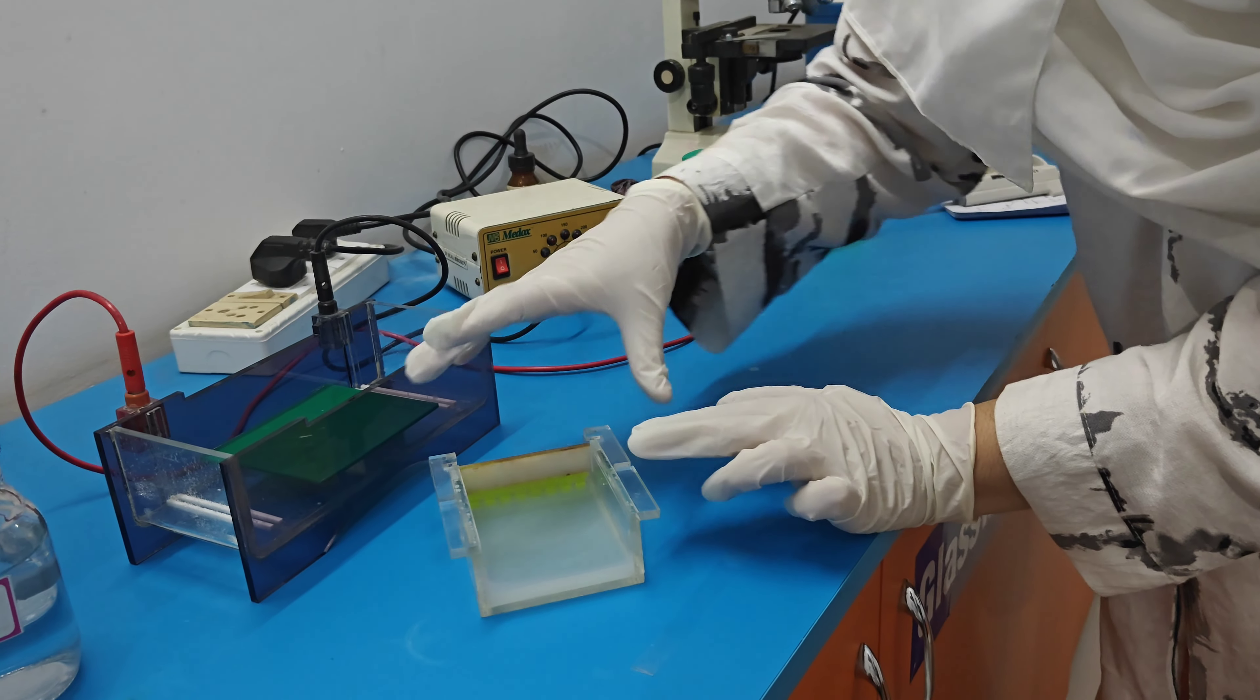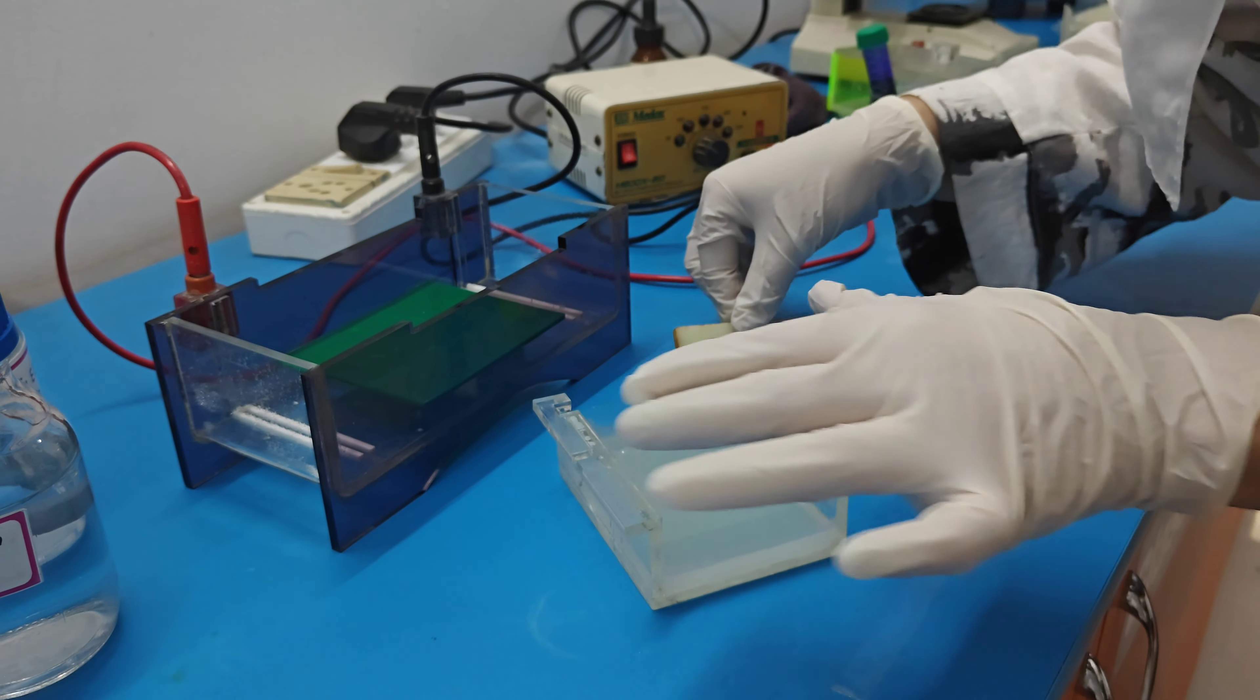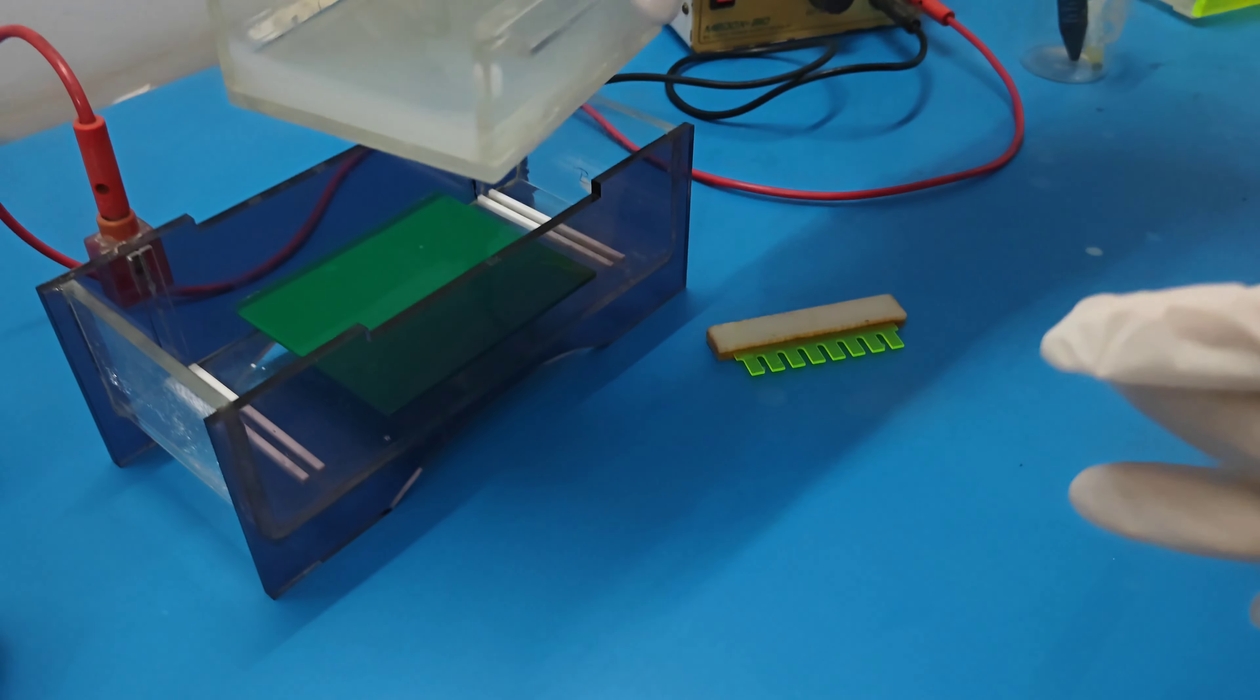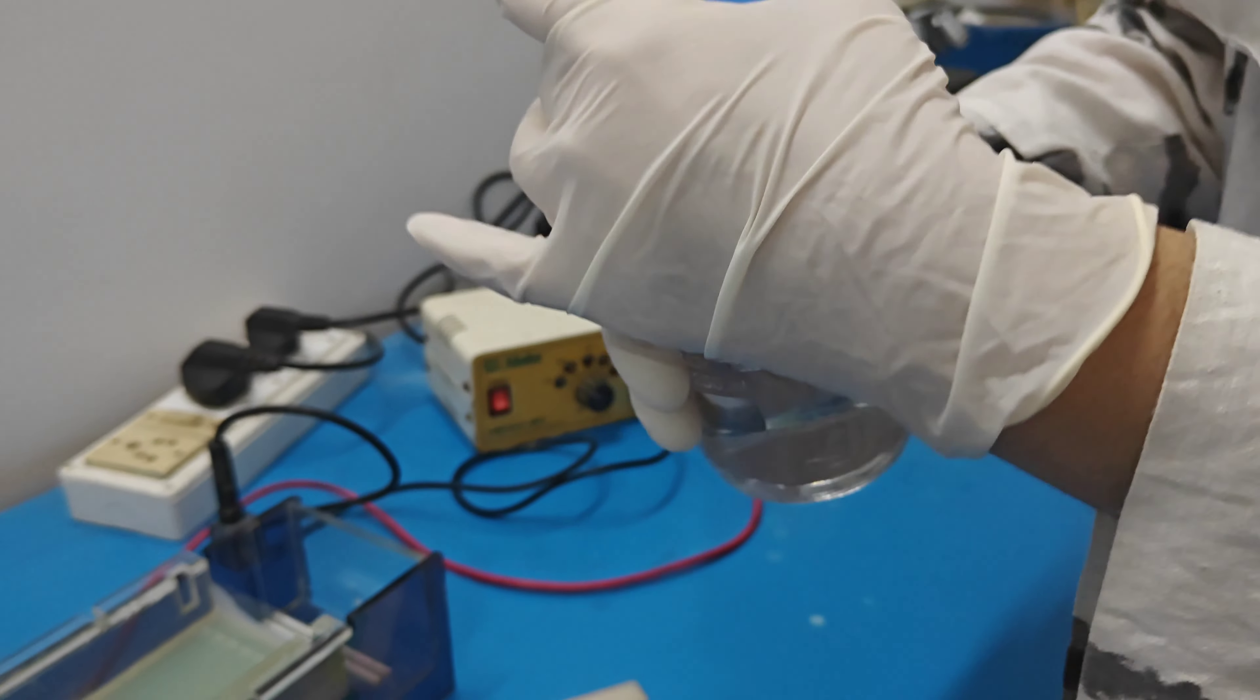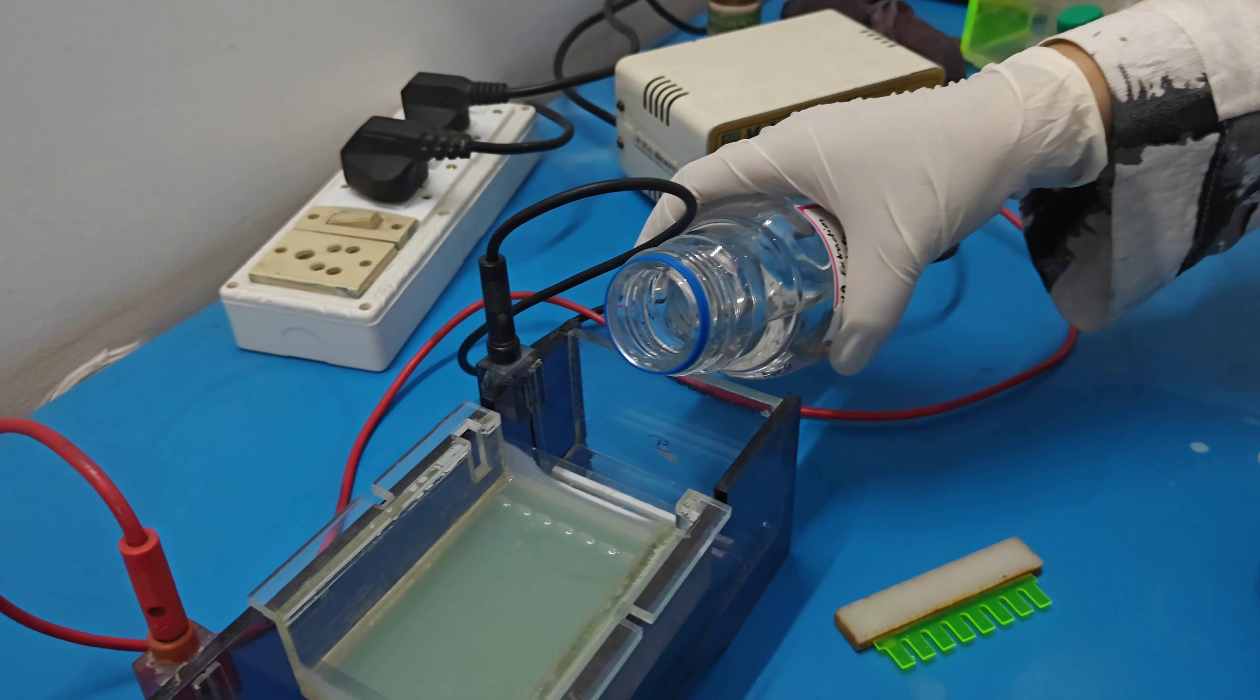Now our agarose gel is solidified. Now we remove the comb very carefully without disturbing the gel. See the wells are formed. The wells are very clear. Now put the casting tray into a caster and pour the Tris EDTA buffer. Pour it from one side and immerse the casting tray.